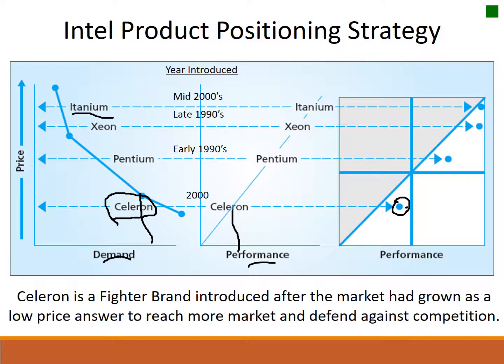This demonstrates that as a product category evolves, different products are launched for different reasons. If you're the market leader, the introducer, the innovator, you can often enter with a mid- or high-level price product because initially you won't have much competition. However, at some point during the growth stage, competitors will enter the market and pressure you on price and product quality, trying to take your market share. As a result, sometimes you have to react, and Intel certainly did with the Celeron.